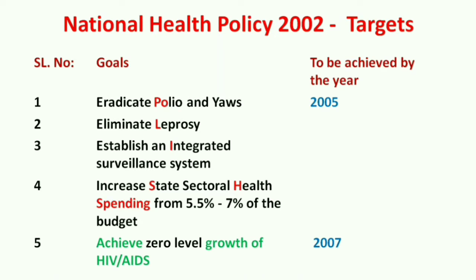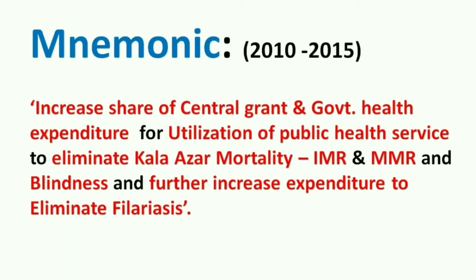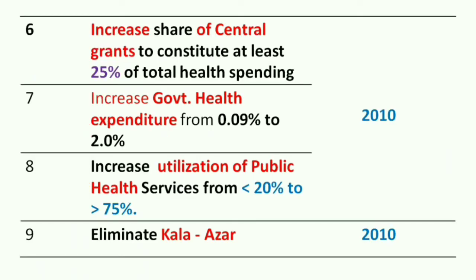By 2007, only one target has to be achieved: achieve zero level of growth of HIV/AIDS. The second mnemonic for 2010 to 2015 is: 'Increase share of central grant and government health expenditure for the utilization of public health service to eliminate Kala-azar mortality — that is IMR and MMR — and blindness, and further increase expenditure to eliminate filariasis.'